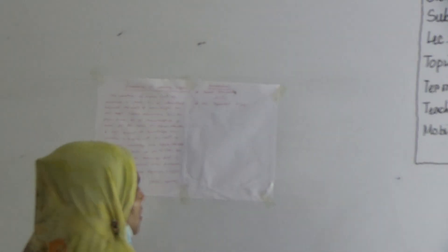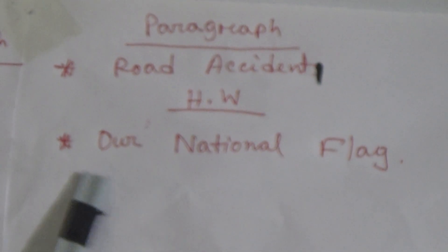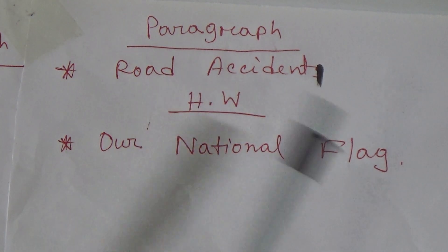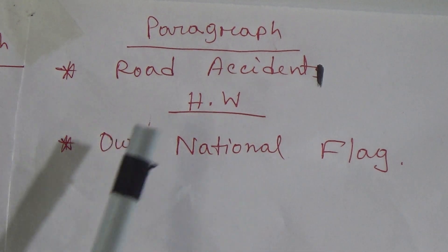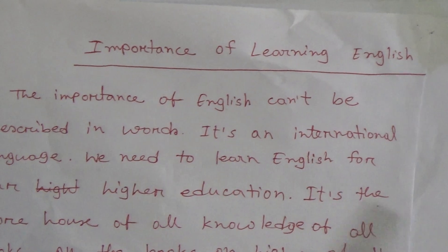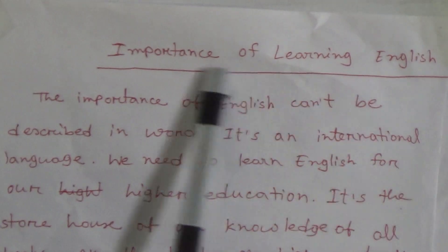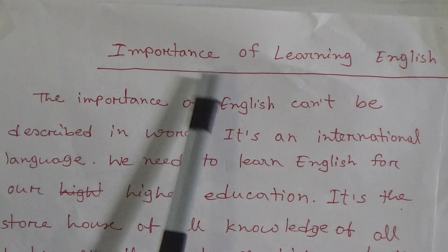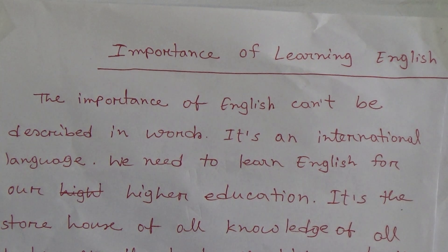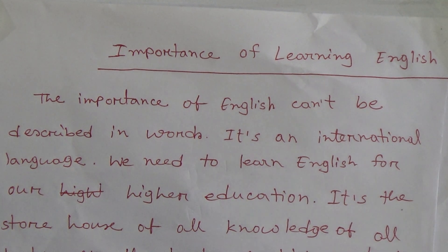Dear students, at first I am going to give you our SW. You will do this paragraph — our national flag — as your SW. And you will learn at your home paragraph road accident 2. Here I have given in front of you another paragraph which is about importance of learning English. These 3 paragraphs — first, importance of learning English; second, road accident; and third, our national flag — you have to read for your annual exam.